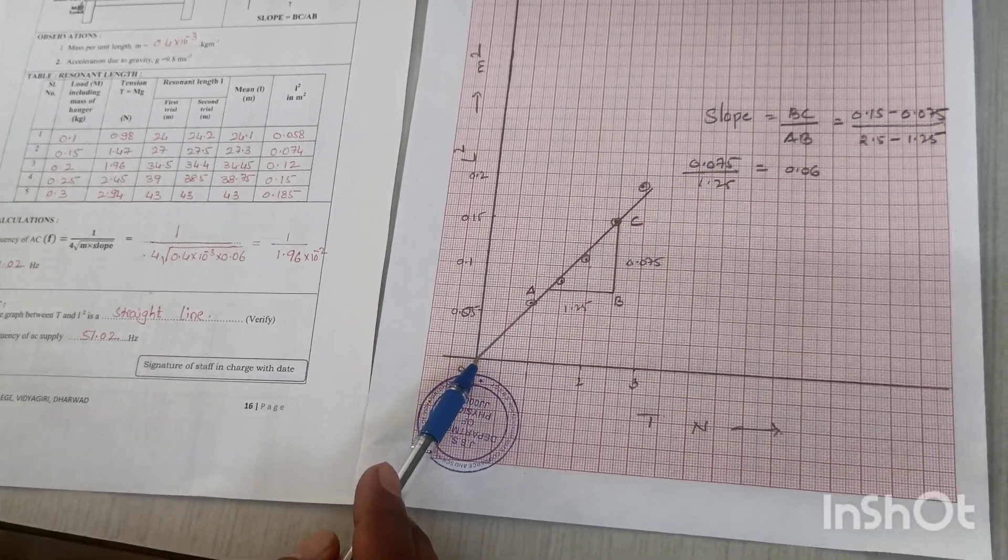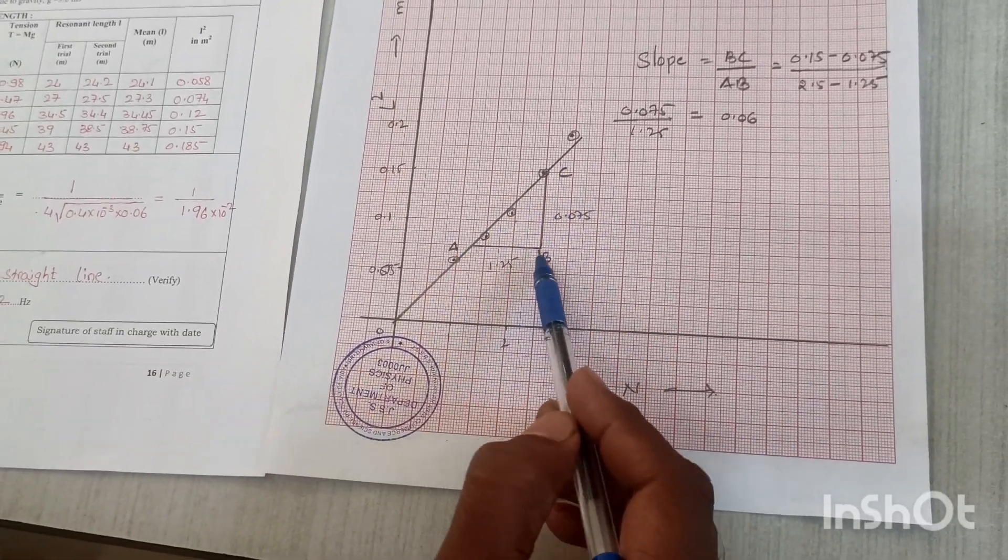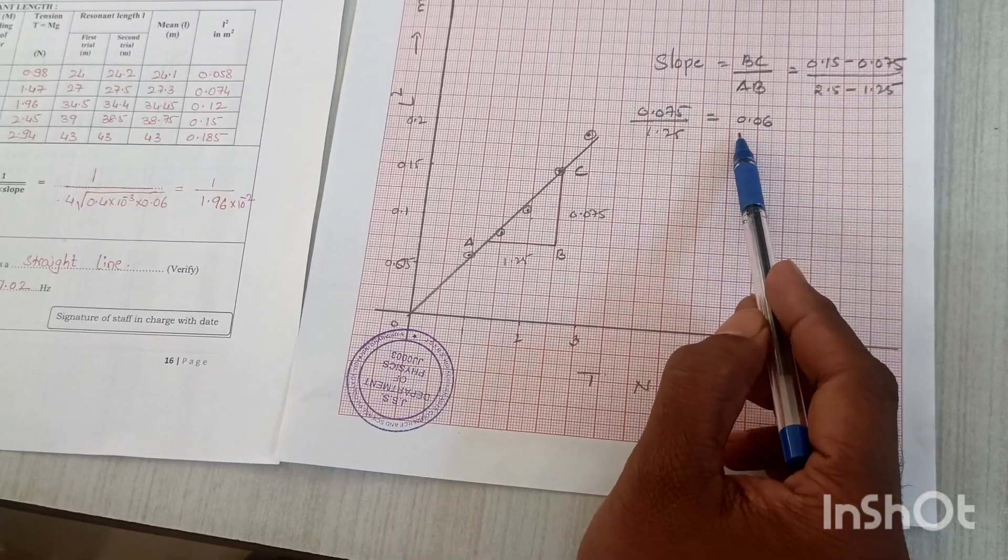A straight line passing through the origin is observed. The slope value is found by forming a triangle ABC, where BC divided by AB gives a slope of 0.06.